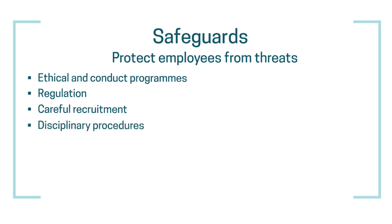We've also touched upon disciplinary procedures — having clearly communicated repercussions for unethical behavior, which might range from verbal or written warnings to financial penalties, dismissal from an organization, or even legal action in the most serious cases. Finally, staff performance procedures ensure that all staff are performing adequately by reviewing any issues that relate to both personal or professional conduct. For example, if a member of staff reports a colleague to their manager for breaching a particular ethical standard, that manager has a duty to review the conduct of the employee in question and take any appropriate action to address the issue.